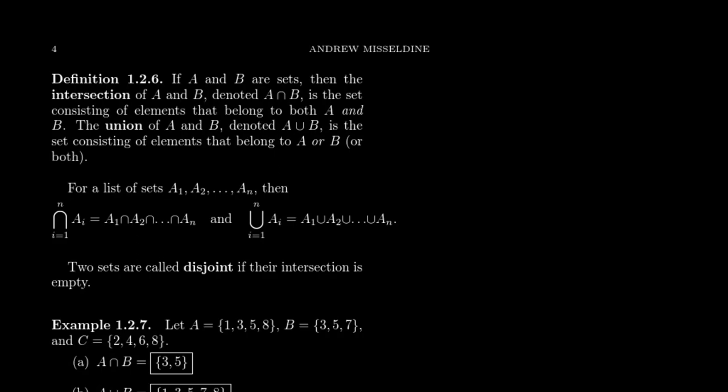So if we have two sets A and B, we can talk about the intersection of the sets, denoted A intersect B, which in LaTeX you just write A backslash cap B. The intersection is the set consisting of elements that belong to both A and B.